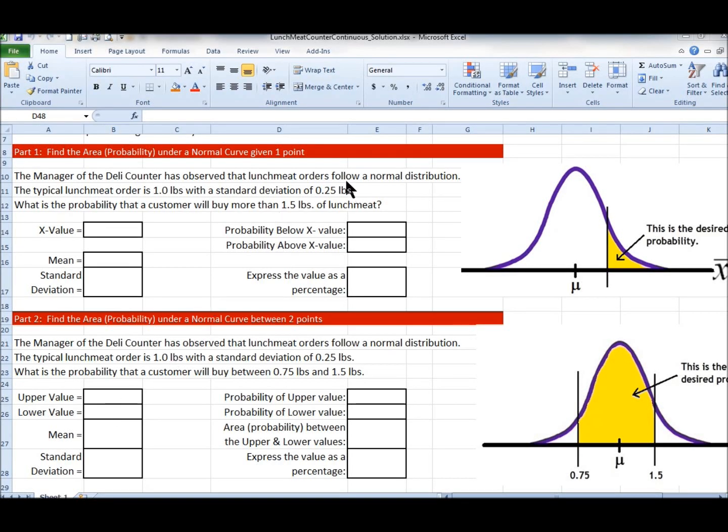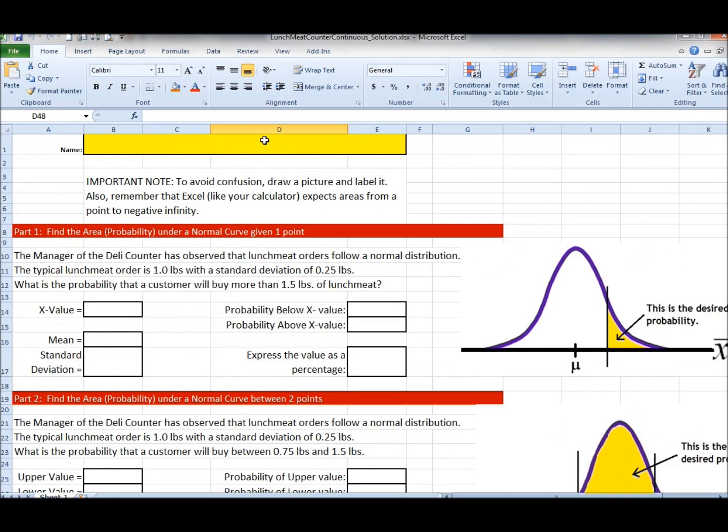So today we're working with normal probability distributions in Excel. We've got our worksheet here and remember you're always going to start by putting your name up at the top. Always put your name on the work and we've got an important note here. It says to avoid confusion, draw a picture and label it.